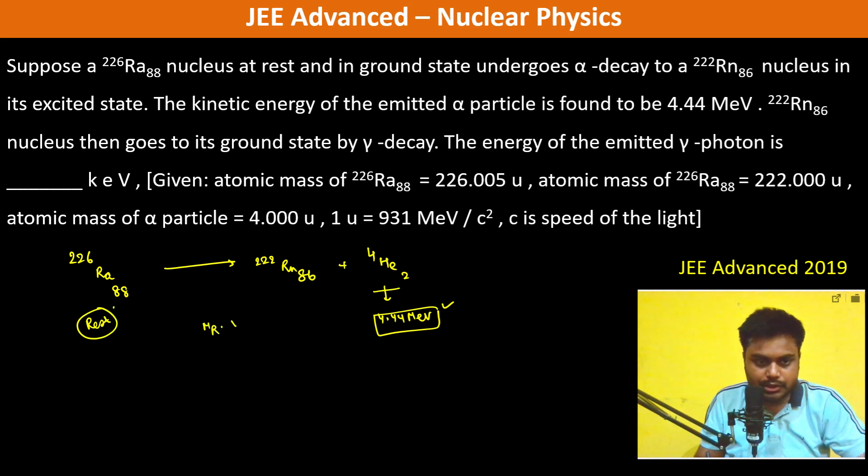Mass of R into V_R should be equal to mass of alpha into V_alpha. Okay, by conservation of momentum, and this is going in this direction, this is going in this direction.